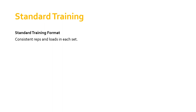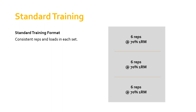Let's begin by talking about what standard training would look like. In terms of standard strength training, a standard format would essentially be consistent reps and consistent loads for each set. So let's say you're going to do three sets — each of those sets would be identical. There's absolutely nothing wrong with this. It's a great way of doing it, tried and tested. For example, working at 70 percent of your one rep max, doing three sets of six reps — no problem with that whatsoever.